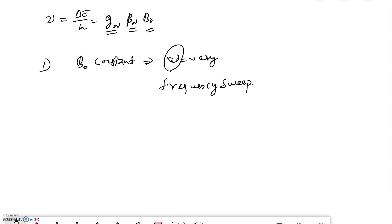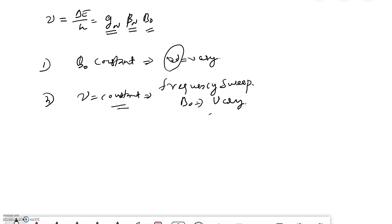Another method keeps the frequency constant and varies the applied field strength B₀. At a particular value of field strength, the transition occurs and nuclear spin flipping takes place. This is called the field sweep method. Both methods can be used to record NMR spectra.